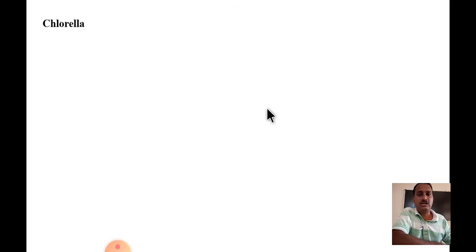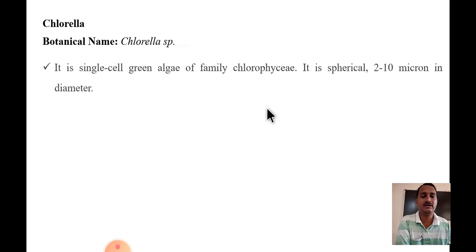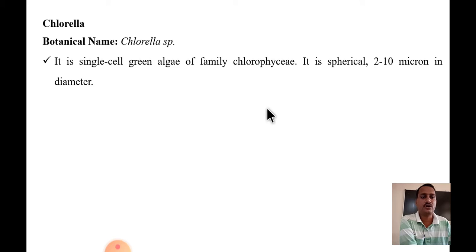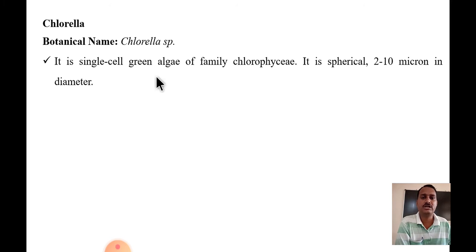Chlorella is basically a green algae; the botanical name is Chlorella species. There are different species and different strains which are used as a protein-rich diet, just like spirulina. The basic difference between chlorella and spirulina is that spirulina is a blue-green algae and chlorella is a green algae. It is a single-cell green algae of the family Chlorophyceae, while spirulina belongs to the family Oscillatoriaceae.